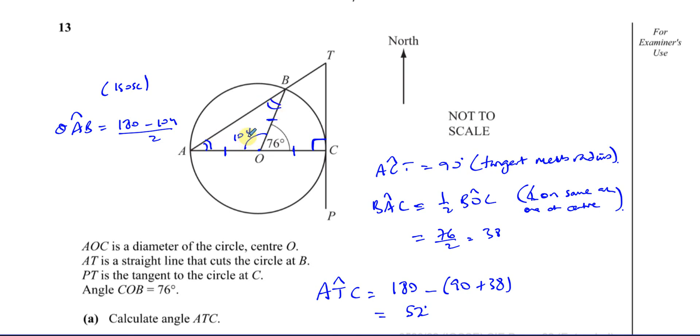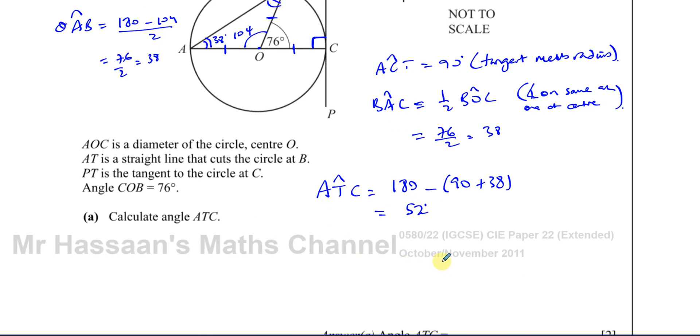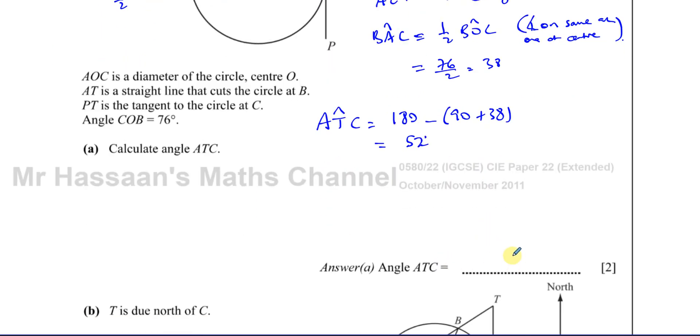Because this angle is the same as that. These two are the same, because it's isosceles. So 180 minus 104, what's left is divided equally between those two. So that gives you 76 divided by 2, which is 38, as we found. That's 38 degrees. And once we worked out that's 38, again, we can do the same thing using angles in triangles. The same answer here for ATC is equal to 52 degrees. So that's the answer for ATC, 52 degrees.